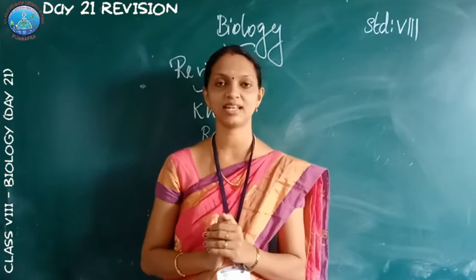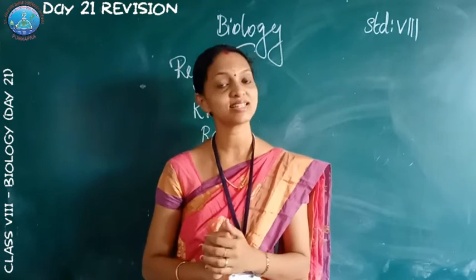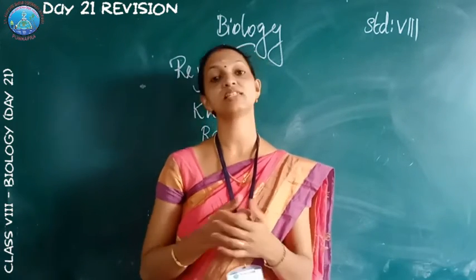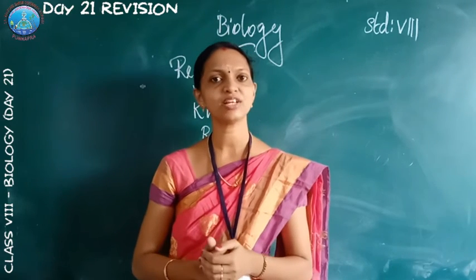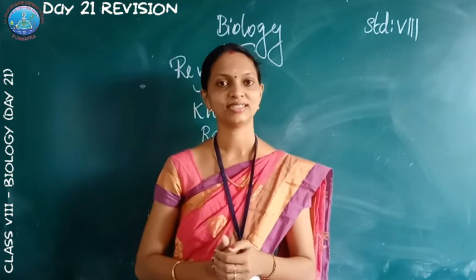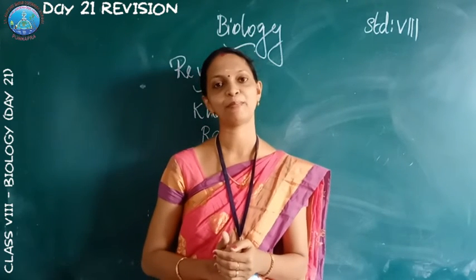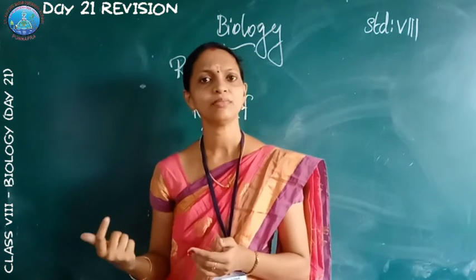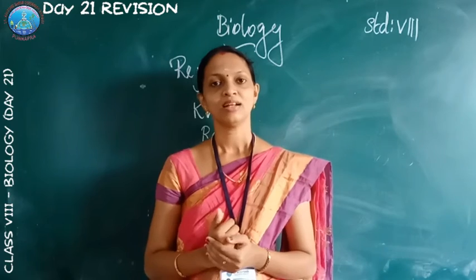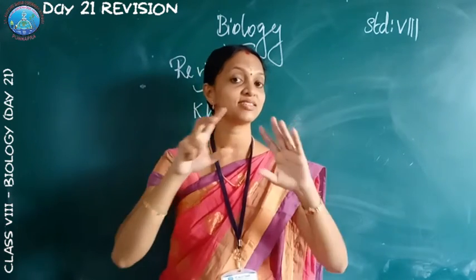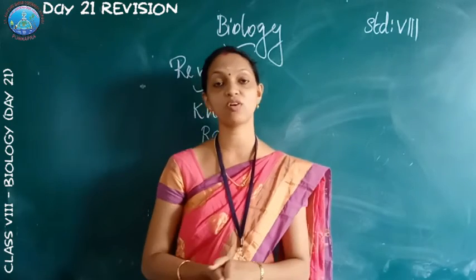The third lesson is Conservation of Plants and Animals. In this lesson, we study deforestation. What is deforestation? Cutting of trees and plants in a forest, or clearing of the forest, is called deforestation. What is the difference between a zoo and a wildlife sanctuary? A zoo creates an artificial habitat and protects animals and plants. In a wildlife sanctuary, animals are protected in their natural habitat. What is the difference between flora and fauna? Plants are called flora and animals are called fauna.